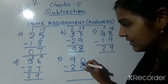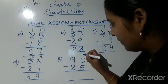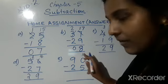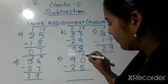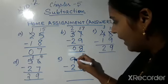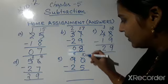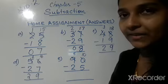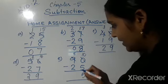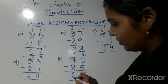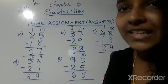Now the next question: 90 minus 25. We borrow 1 from 9, so 0 becomes 10 and 9 becomes 8. So 10 minus 5 is 5. Then 8 minus 2 is 6. So we got the answer 65.